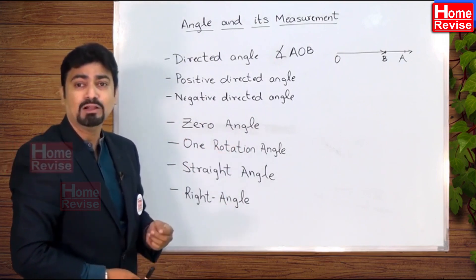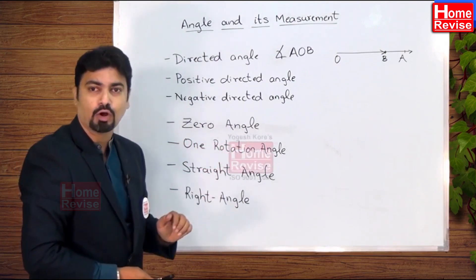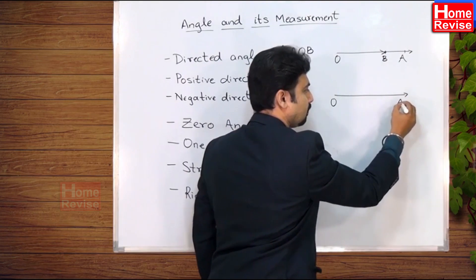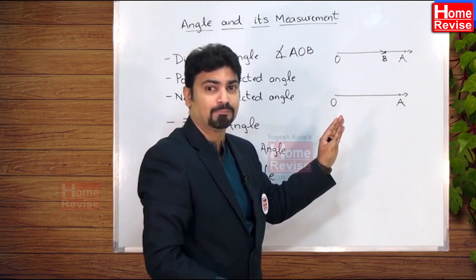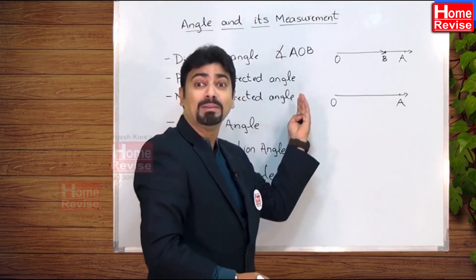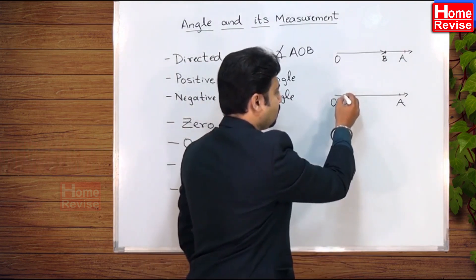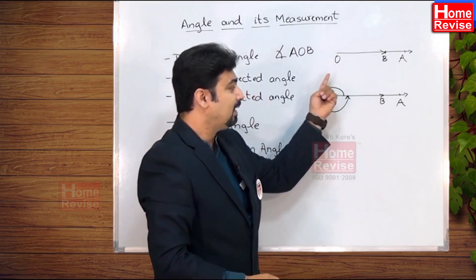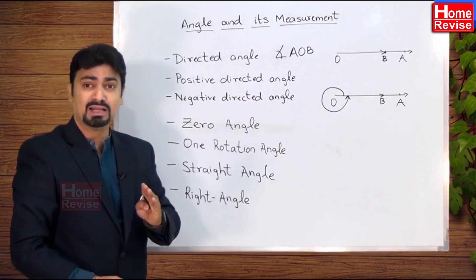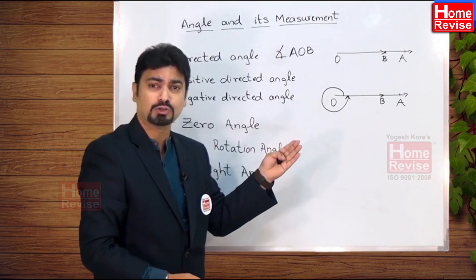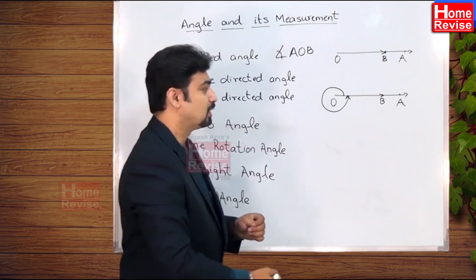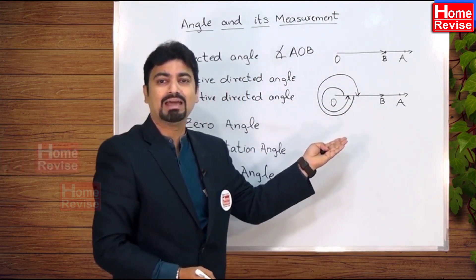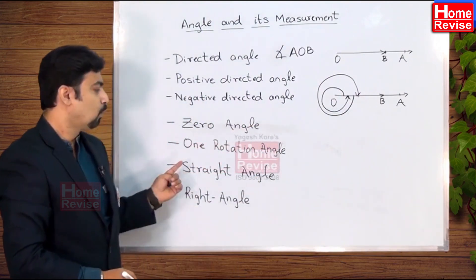What is a one rotation angle? An angle which has completed one full rotation, either in the anticlockwise or clockwise direction, is known as a one rotation angle. If OA is the initial arm and we rotate it in the anticlockwise direction completely until it again coincides with its original position, angle AOB has completed one rotation. Similarly, rotating in the clockwise direction until it coincides with the original position also gives a one rotation angle.